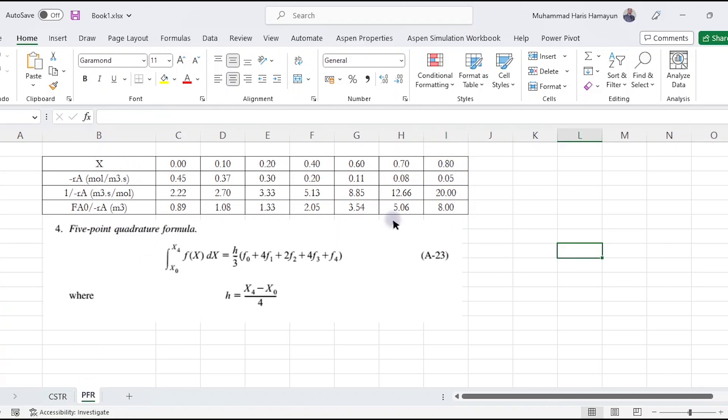Now moving to PFR using the same values. There are five terms total. First term is F0, which is FA0 over minus RA at x = 0. Second term F1 is FA0 over minus RA at x = 0.2, which equals 1.33. Third term F2 is FA0 over minus RA at x = 0.4, which equals 2.05. Fourth term F3 is FA0 over minus RA at x = 0.6, which equals 3.54. Finally, F4 at x = 0.8.